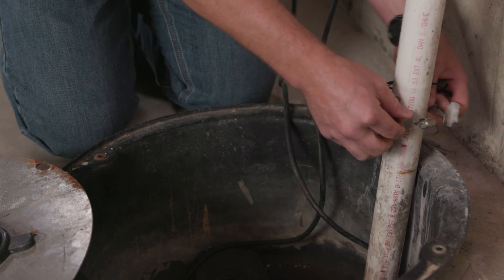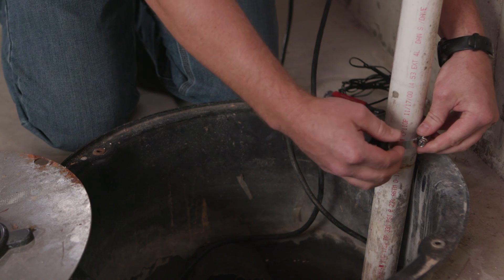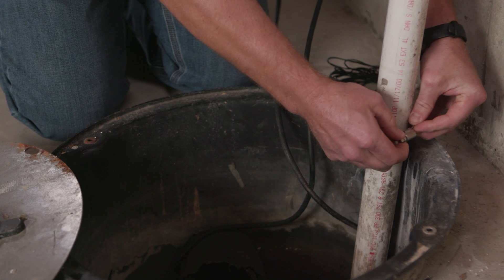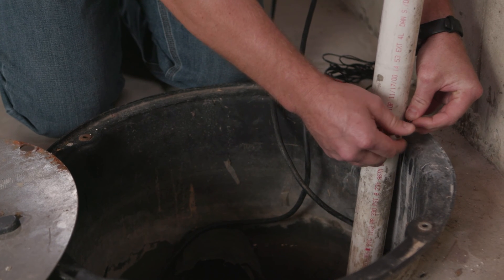Install the high water sensor by wrapping the attached hose clamp around the discharge pipe. Lower the sensor to the desired position and tighten the hose clamp using a standard screwdriver.